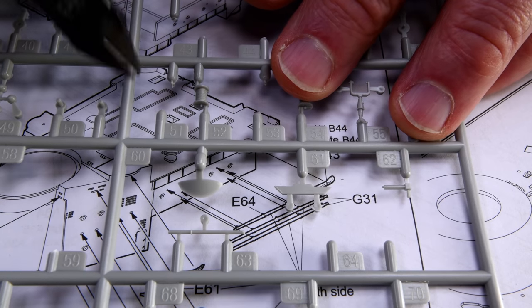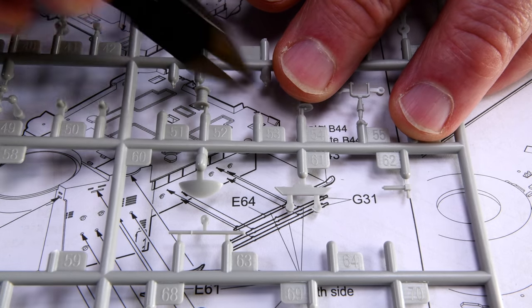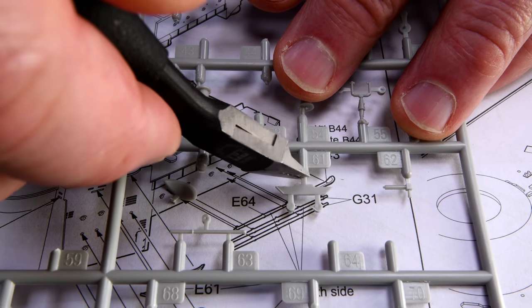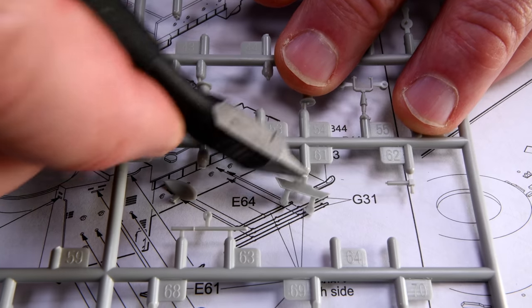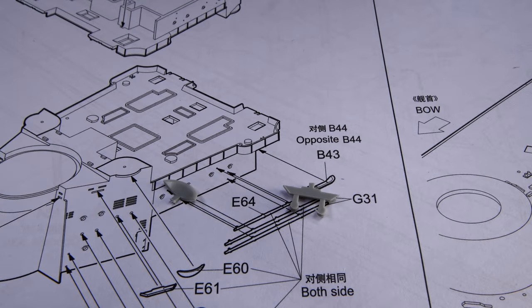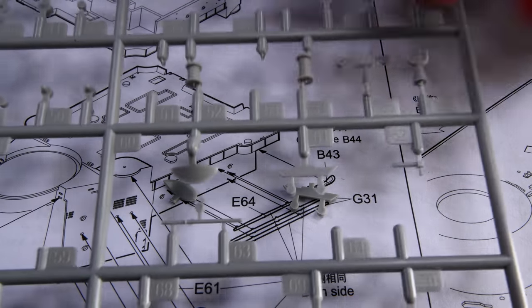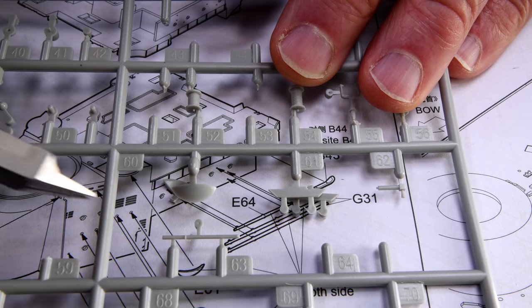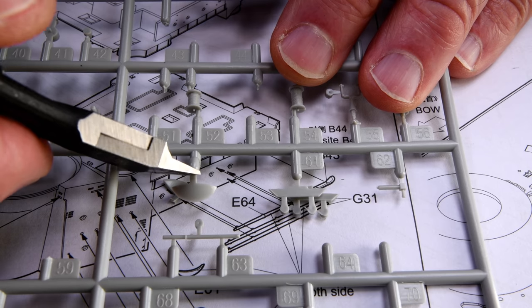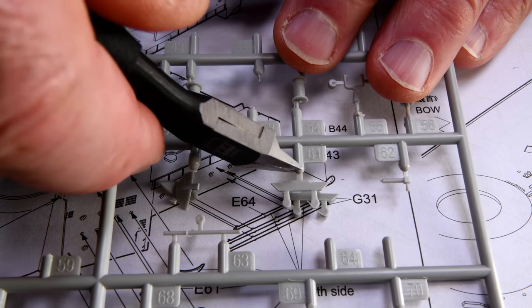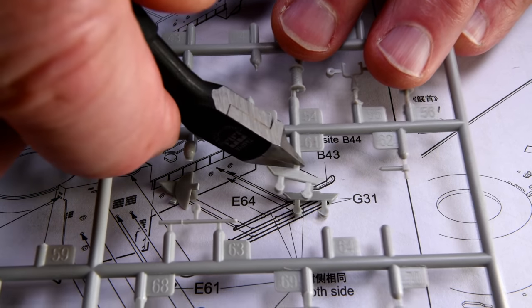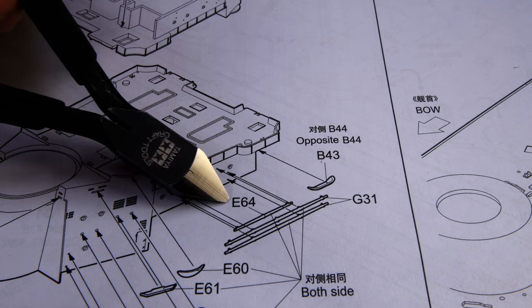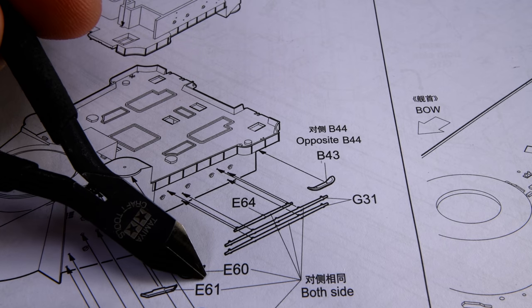Here's 60, 61. And because we have to do the other side as well. Now I do believe that's it for the E sprue.